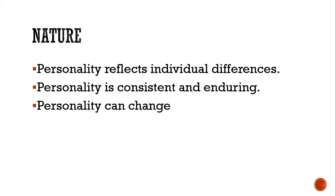The second nature of personality is that it is consistent and enduring. An individual's personality tends to be both consistent and enduring over time. For example, siblings may comment that a sister has always cared greatly for others since she was a toddler — this supports the contention that personality has both consistency and endurance, even in everyday choices like colors of clothing.